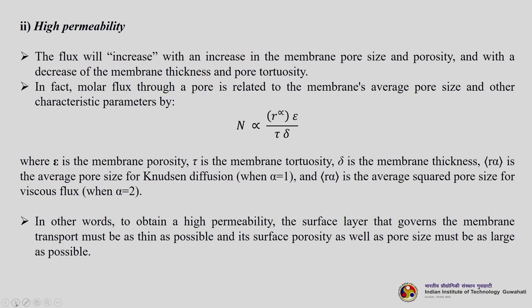For high permeability, flux increases with increasing membrane pore size and porosity, and with decreasing membrane thickness and pore tortuosity. Molar flux through a pore is: n ∝ R^α · (ε / τ·δ), where ε is membrane porosity, τ is tortuosity, δ is membrane thickness, and R^α is average pore size (α = 1 for Knudsen diffusion, α = 2 for viscous flow). To obtain high permeability, the surface layer governing transport must be as thin as possible with its surface porosity and pore size as large as possible.